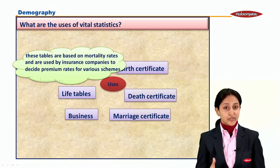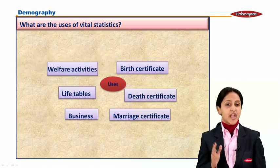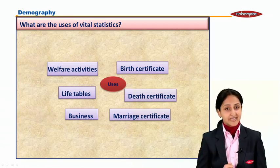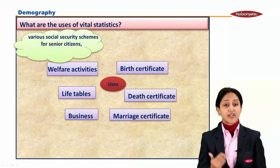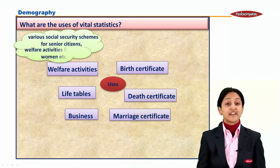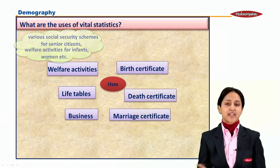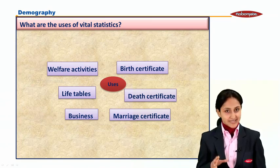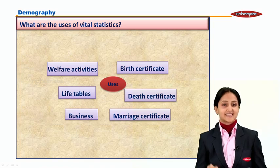These being the very important uses of vital statistics, let's look at the last but not the least — that is welfare activities. The government and various social organizations use vital statistics to decide social security schemes for senior citizens, welfare schemes for children, for women, for infants and so on. So these are the very important uses of vital statistics. In this chapter, we saw how demography is measured — that is, size, structure, and composition of a population — with the help of vital statistics.